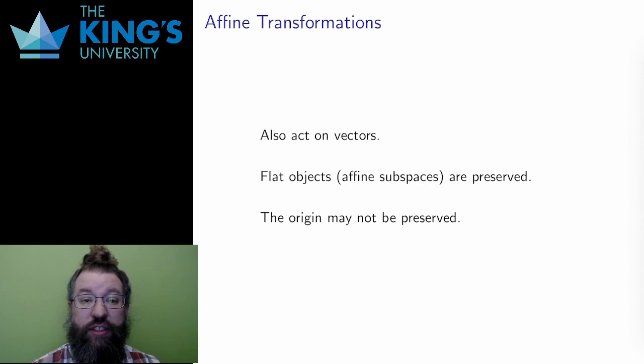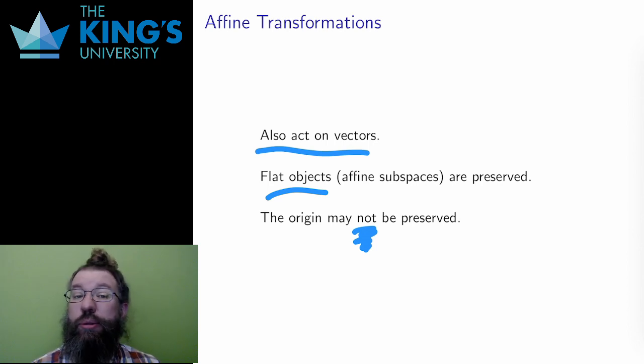Finally, there is a related class of transformations called the affine transformations. These also act on vectors and preserve flat objects. Lines and planes are sent to lines and planes. Linear transformations had to preserve the origin, but affine transformations do not need to. In this way, linear transformations send linear subspaces to linear subspaces, but affine transformations send affine subspaces to affine subspaces. I'm not going to spend that much time on affine subspaces and transformations, but I did want to state the definition. They can mostly be understood by doing a linear transformation and then a shift, much like the offset that defines an affine span. Shifts are not that difficult to understand. Most of the complexity is in the linear transformation part.